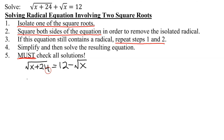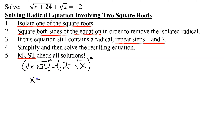I've isolated one of my square roots, and now I need to square both sides of the equation. I'm going to square the left-hand side, and notice I'm squaring the right-hand side. This is a binomial — I can't square each term individually. I have to take the quantity 12 minus the square root of x and square that. On the left-hand side, when you square a square root, you just get the radicand. So I'm left with x plus 24 equals...